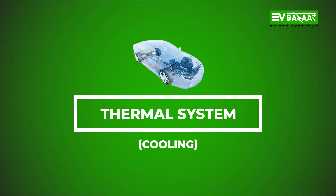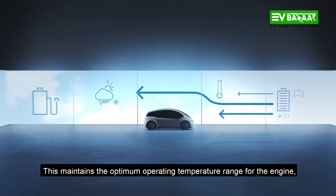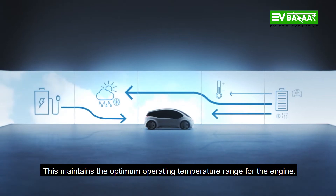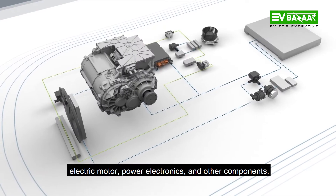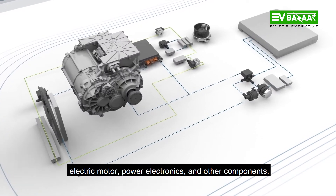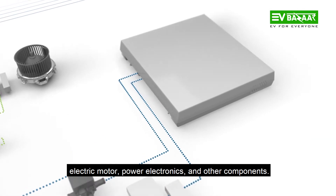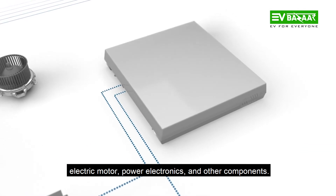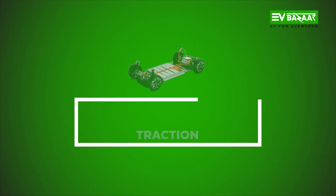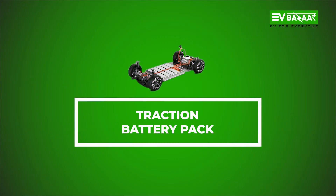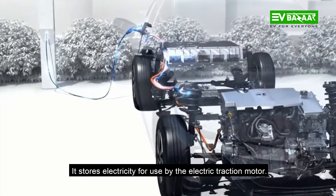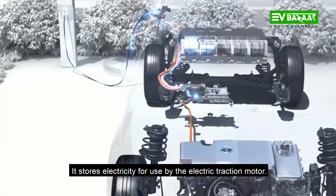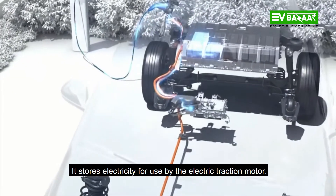Thermal System: This maintains the optimum operating temperature range for the engine, electric motor, power electronics, and other components. Traction Battery Pack: It stores electricity for use by the electric traction motor.